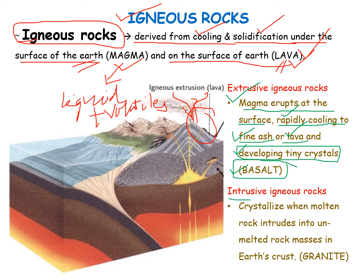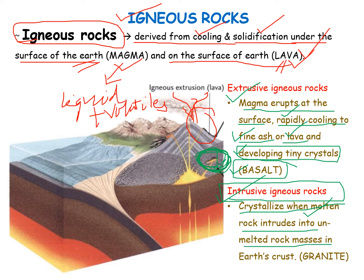Moving on to the second type of igneous rock, that is the intrusive igneous rock. In the intrusive igneous rock, it is formed within or below the surface of the earth, not on top of the surface. It crystallizes when the magma intrudes into an un-melted rock mass. This is the part where our intrusive rock will form because the magma comes and is present in the melted rock mass, not on the surface of the earth.